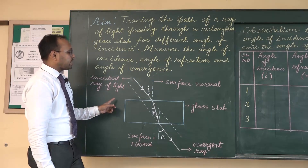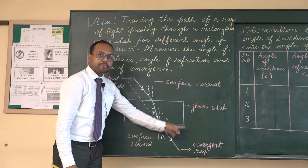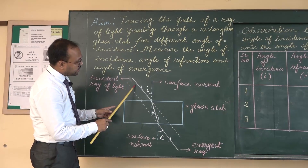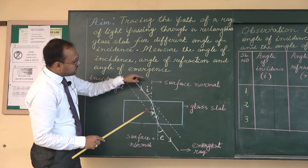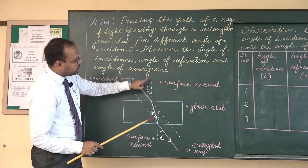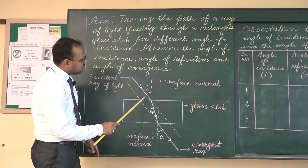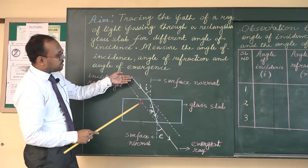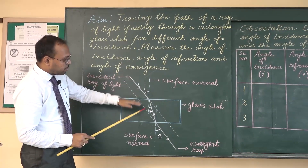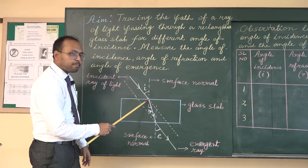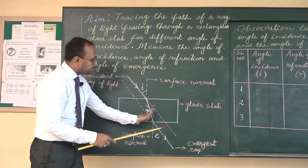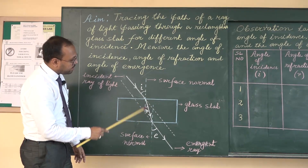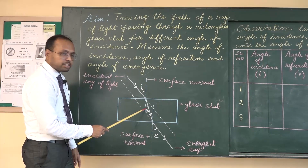We are taking a glass slab. An incident ray falls on the glass slab, and at the point of incidence we draw a normal. This angle is called the angle of incidence. When the light ray enters from a rarer medium to a denser medium, refraction occurs and the ray bends towards the normal. This angle between the refracted ray and the normal is called the angle of refraction.